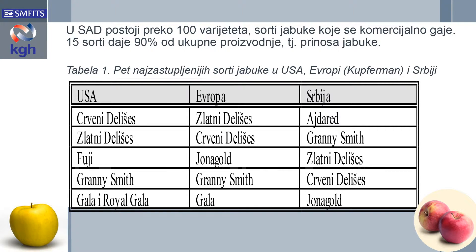U Sjedinjenim američkim državama postoji preko 100 varijeteta, odnosno sorti jabuke koje se komercijalno gaje, ali samo 15 sorti daje 90% od ukupne proizvodnje. Zato je ovde prikazano pet najzastupljenijih sorti jabuke u Sjedinjenim američkim državama, zatim u Evropi prema navodima Huppermana, i obrada autora sa podacima kako stvari stoje u Srbiji.